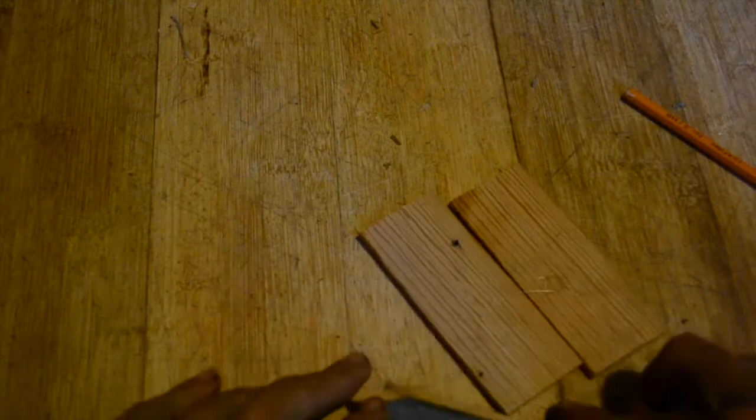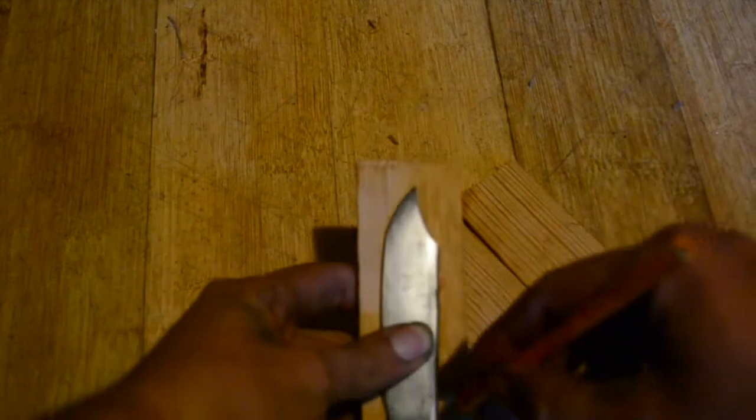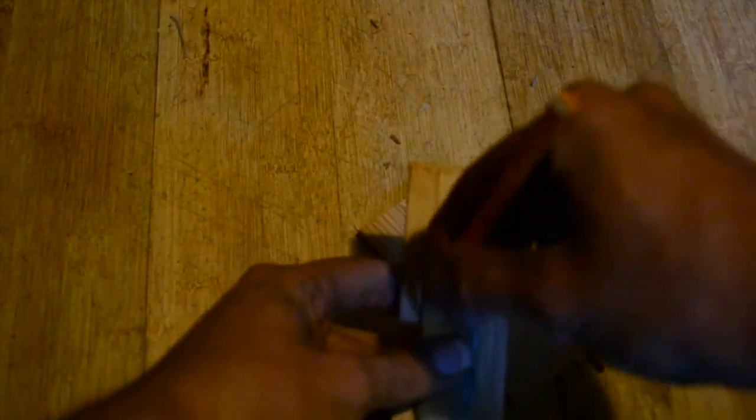Instead of a standard leather sheath, I'm going to be making a wood core scabbard, similar to what people would use for a sword blade. To begin with I take several panels of wood and I trace the knife blade onto one of them. This will serve as the bottom of the scabbard.